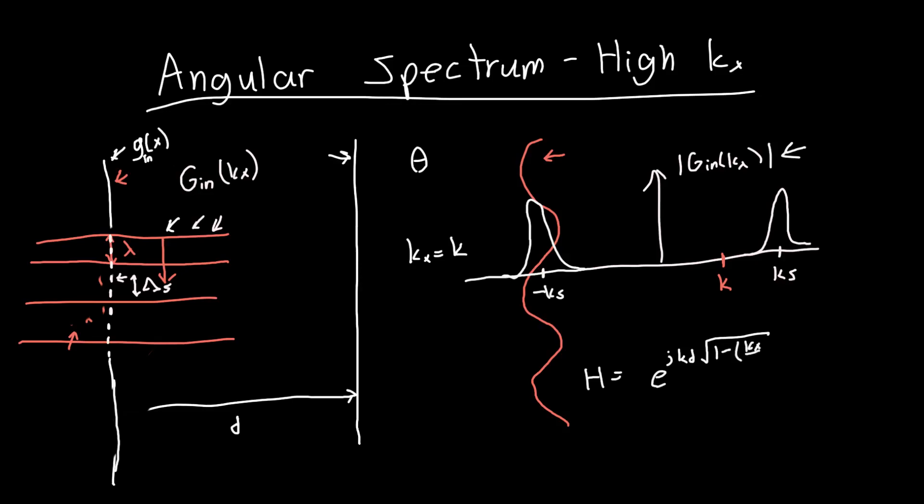So 1 minus kx over k squared. So what happens to this transfer function when we've got frequencies higher than k? So what happens when kx is larger than k? If kx is larger than k, then this value is going to be greater than 1, or we're subtracting a value larger than 1 from 1. And so this whole thing inside the square root, this argument, is going to be negative. And we know that when we take the square root of a negative number, we get an imaginary number, in our case j, because I'm an electrical engineer.